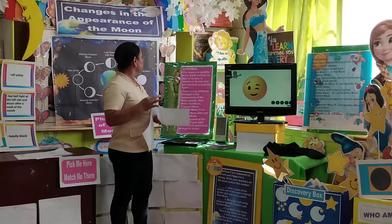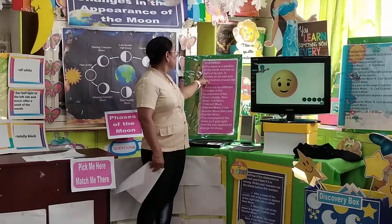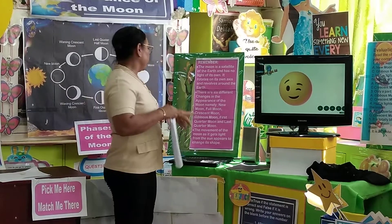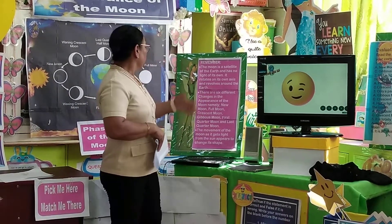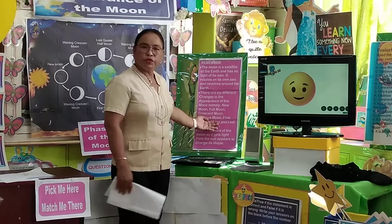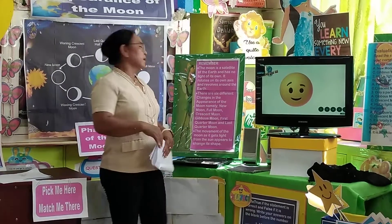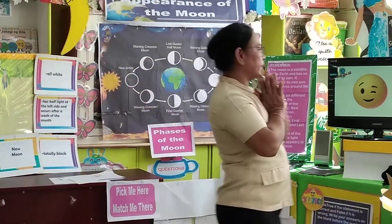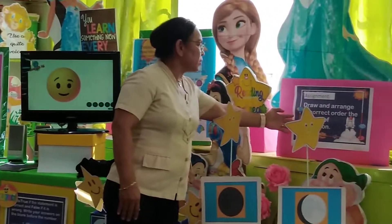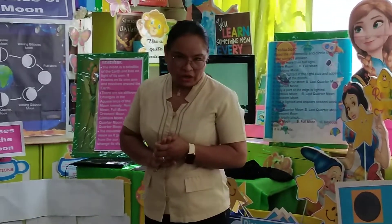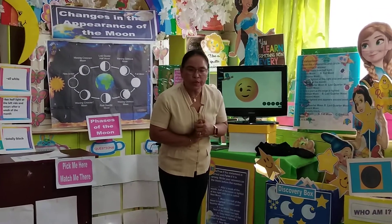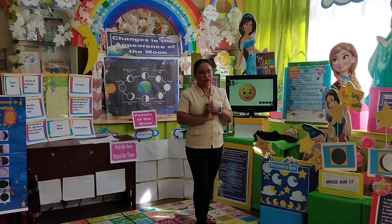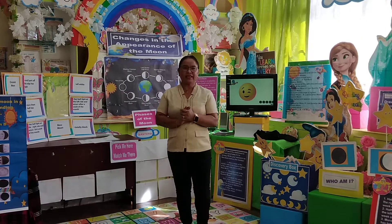Now remember that the moon is the satellite of the Earth and has no light of its own. There are eight different changes in the appearance of the moon — full moon, new moon, crescent moon, gibbous moon, quarter moon, and last quarter moon. For your assignment, draw and arrange in order the phases of the moon. Tomorrow we will check your assignment. See you tomorrow, same time. Goodbye, children, and thank you for listening. Bye-bye.